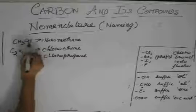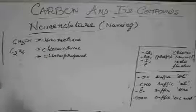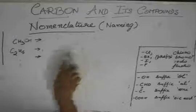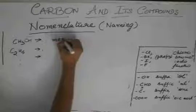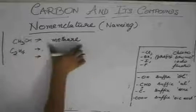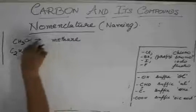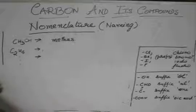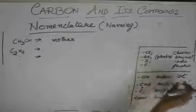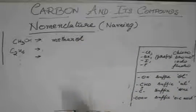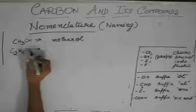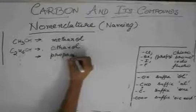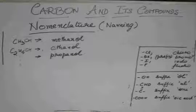Instead of the Cl, if it was OH, then what would it have become? Try it out. One carbon, so methane. OH is the functional group, so it has a suffix. If there is a suffix, you need to delete this E. Delete this E and add the suffix which is -ol. So, methanol. Similarly, this would be ethanol, propanol, butanol, pentanol, etc.